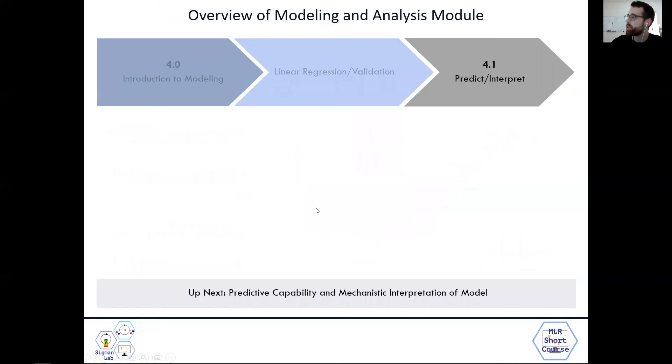So that's the end of module 4.0. Next in 4.1, we'll talk about how to use an optimal model to predict new reaction components, new reaction types and how to start to deconstruct models and look at the different parameters, hopefully gain some mechanistic insight. So I can't wait to see you and hope you join us in the next video. Thanks.